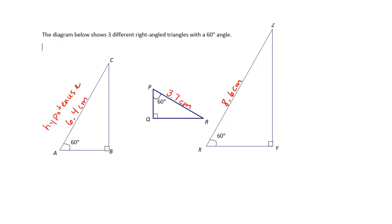Now we're going to measure the shortest side. This angle is 60 degrees, and all three of these triangles are similar triangles because they all have the same angles — 90, 60, and 30. The side that is attached to the angle, touching the hypotenuse, is called the adjacent side. Adjacent means attached to the angle.